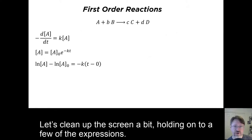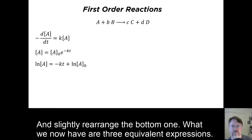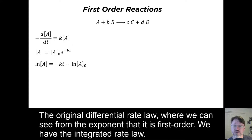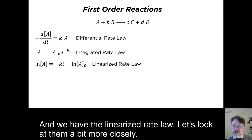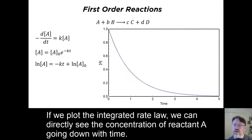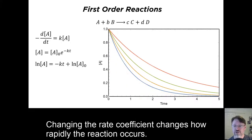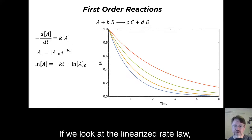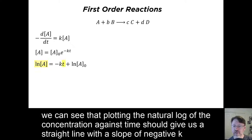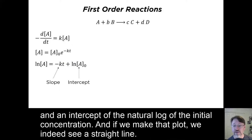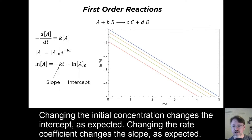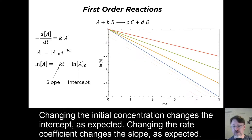Let's clean up the screen a bit, holding onto a few of the expressions, and slightly rearrange the bottom one. What we have now are three equivalent expressions: the original differential rate law, where we can see from the exponent that it is first order; the integrated rate law; and the linearized rate law. If we plot the integrated rate law, we can directly see the concentration of reactant A going down with time. Changing the initial concentration changes where the plot starts, but the shape remains the same. Changing the rate coefficient changes how rapidly the reaction occurs. If we look at the linearized rate law, plotting the natural log of the concentration against time should give us a straight line, with a slope of negative k and an intercept of the natural log of the initial concentration. And if we make that plot, we indeed see a straight line. Changing the initial concentration changes the intercept, and changing the rate coefficient changes the slope, as expected.